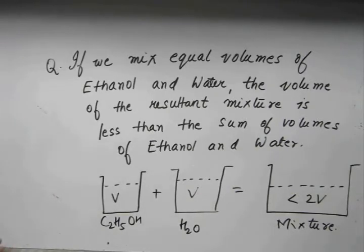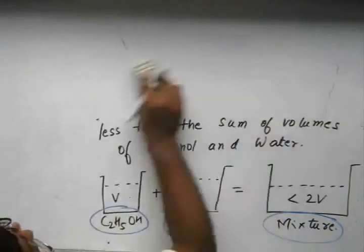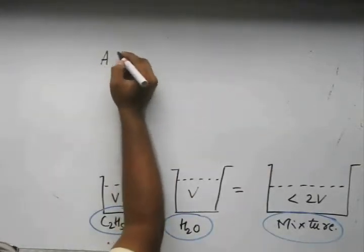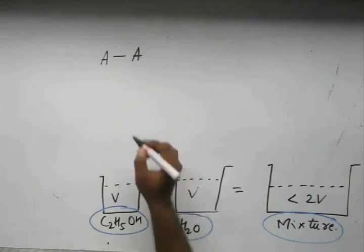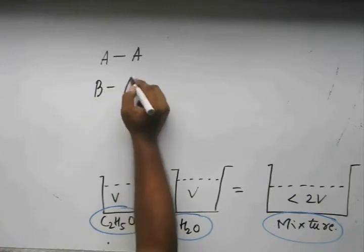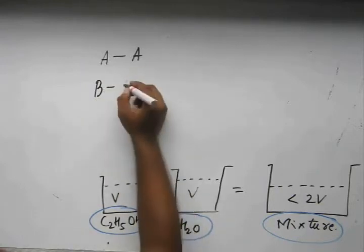Let me now answer this question. It is only because of the hydrogen bonding between ethanol and water that the volume of the mixture is now reduced. To be more specific, let's assume molecule A is representing the molecule of the alcohol and molecule B is representing the molecule of water.